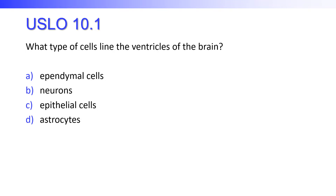What type of cells line the ventricles of the brain — those open areas where there's a bunch of cerebrospinal fluid? Is it ependymal cells, neurons, epithelial cells, or astrocytes? There could be two answers, but the best answer is ependymal cells. Ependymal cells are technically epithelial cells, but it is ependymal cells that line the ventricles — that is the best answer.